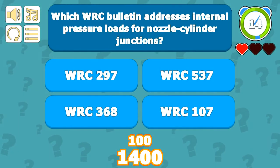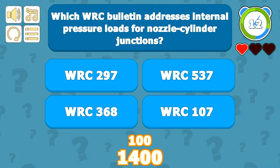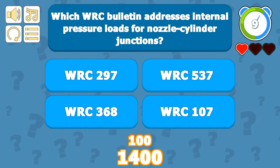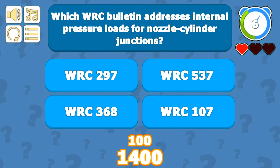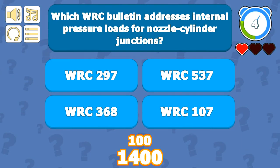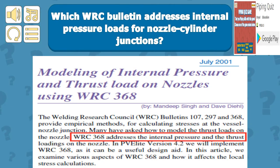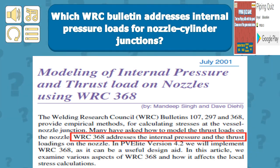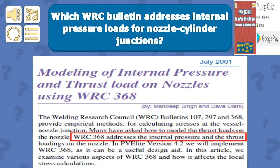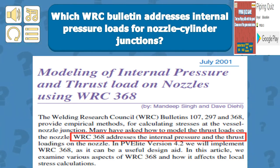WRC Bulletin 368 addresses internal pressure loads for nozzle-cylinder junctions. WRC 368 addresses internal pressure and thrust, as provided in the bulletin. This is also captured in the Caesar II Intergraph bulletin paper presented in July 2001 for modeling internal pressure and thrust loads on nozzles using WRC 368.